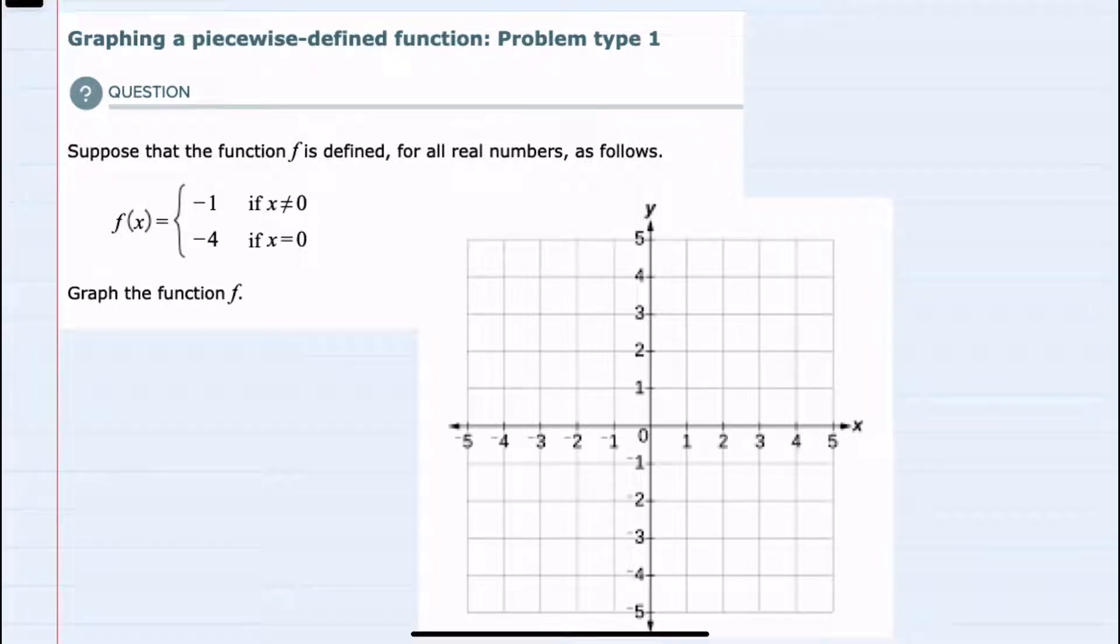In this video I'll be helping you with the ALEKS problem type called graphing a piecewise defined function problem type 1. We're given the function f(x) equals either negative 1 or negative 4, depending on the values of x.